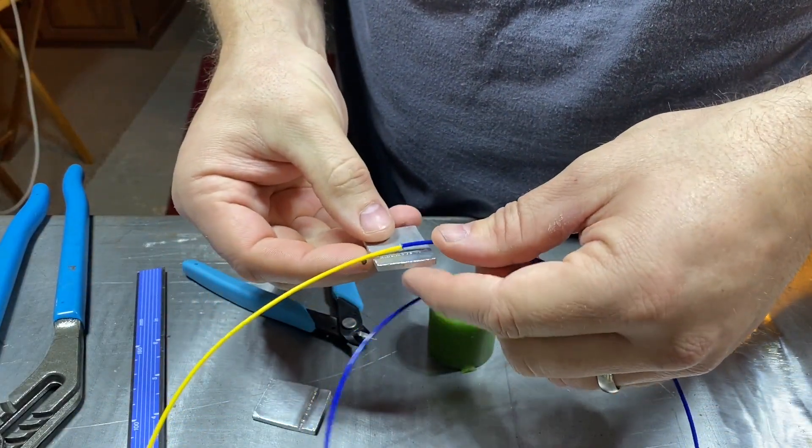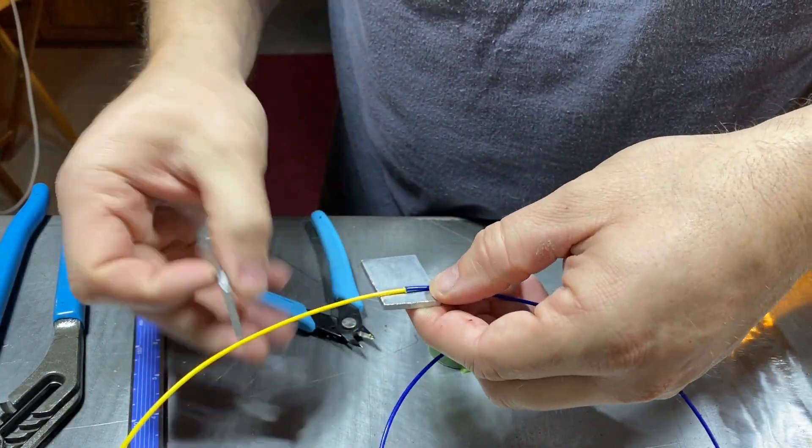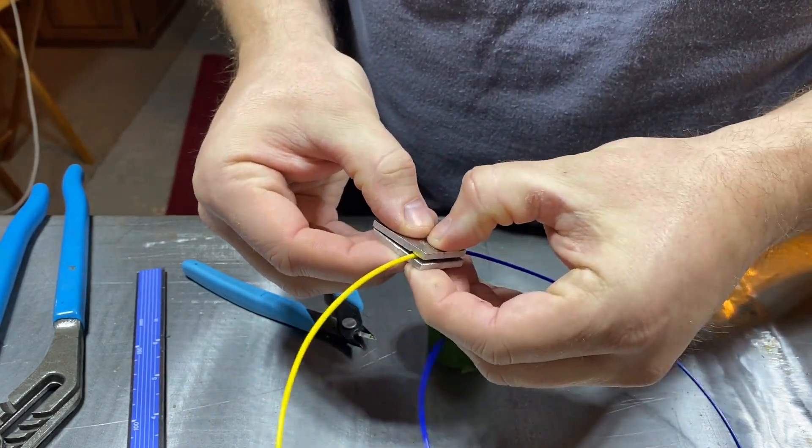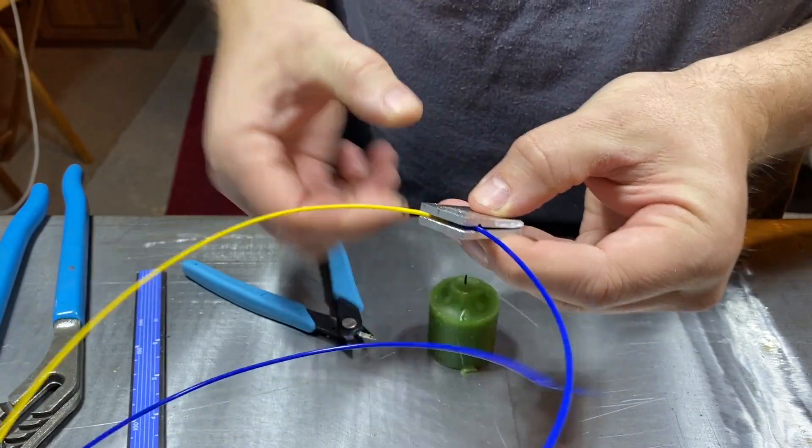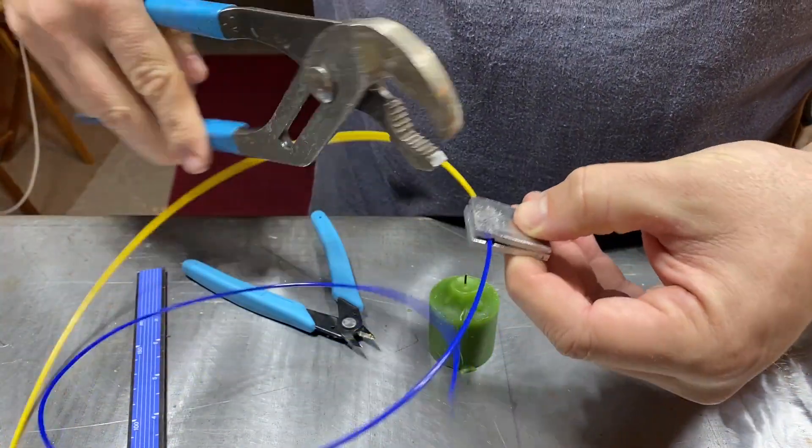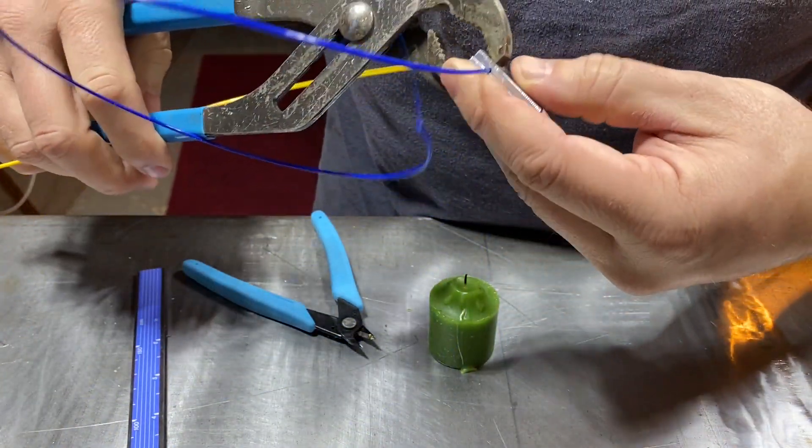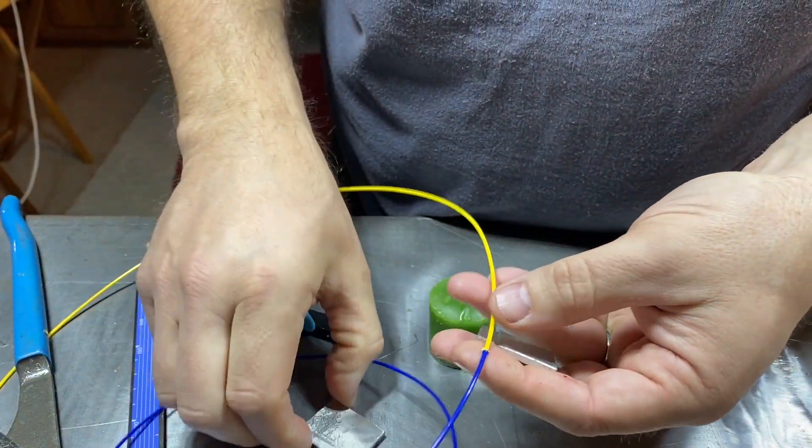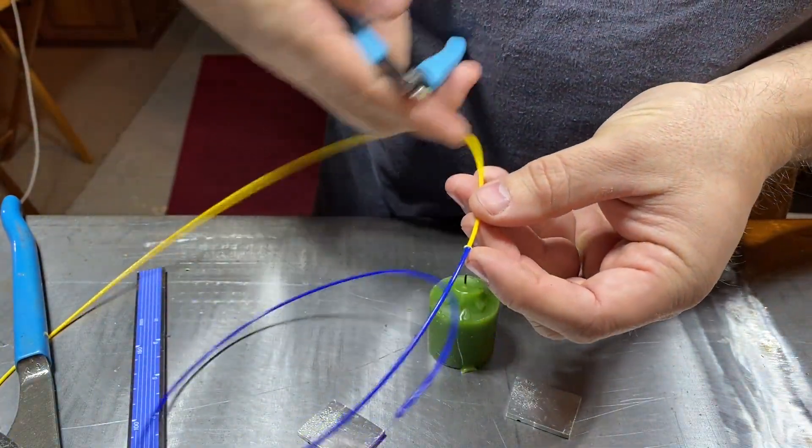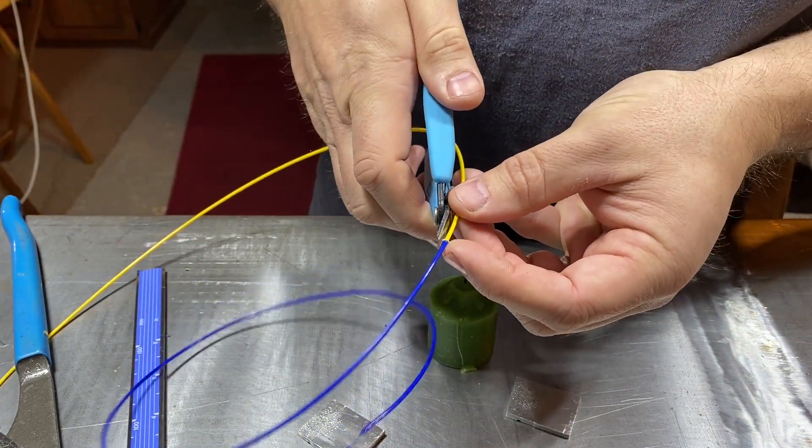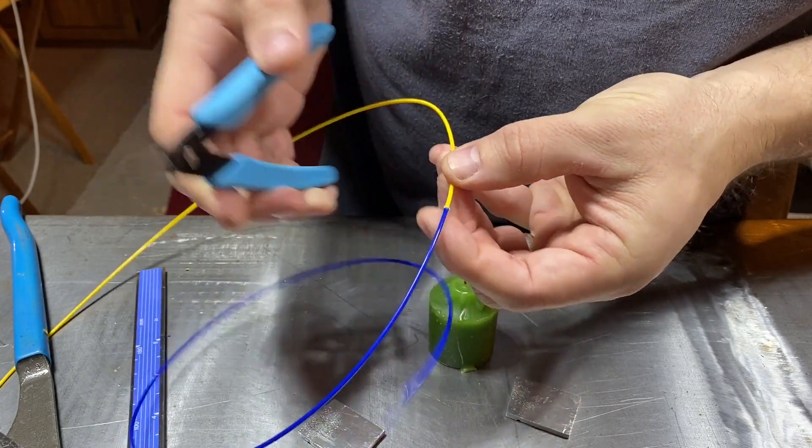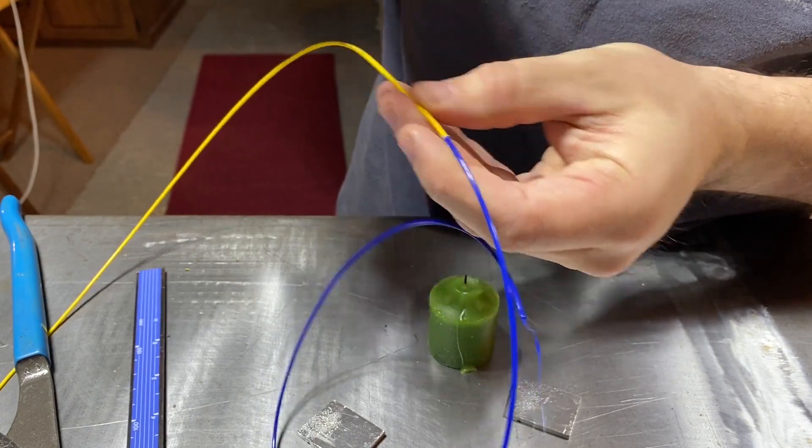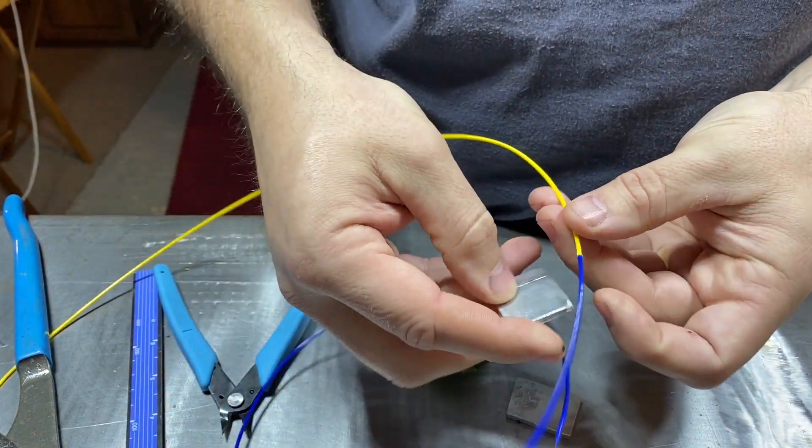Then just take your pliers and squeeze it, and that will cold force that filament into shape. The first time you do it, you'll end up with some stuff on the sides. Just trim the sides and then turn it 90 degrees and do it again.